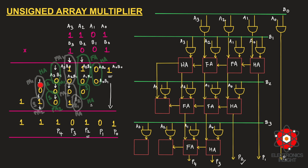For this stage we have three carries along with two partial products. Full adder one handles the first three bits, generating a sum and carry, with the carry propagated forward. Then the sum plus one more carry and one partial product gives three bits, requiring a second full adder. The sixth bit of the final product is p5.